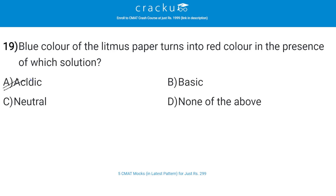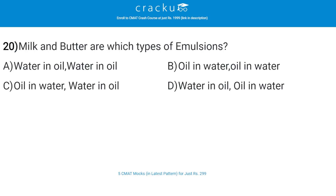Milk and butter are which type of emulsions? The correct answer is C — oil in water / water in oil. In these emulsions, water is in the dispersed phase and oil is in the dispersion medium.